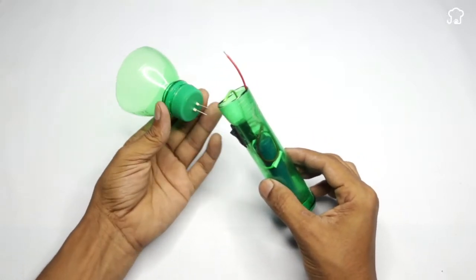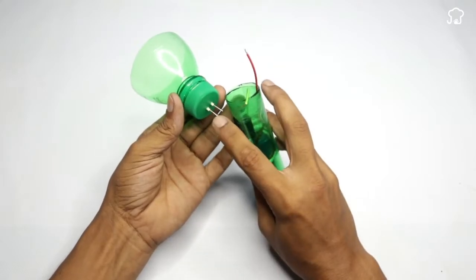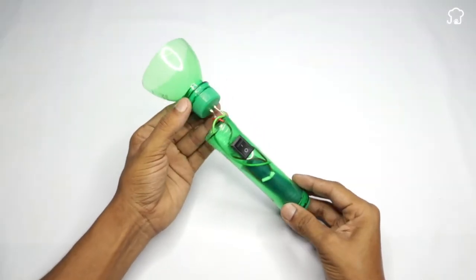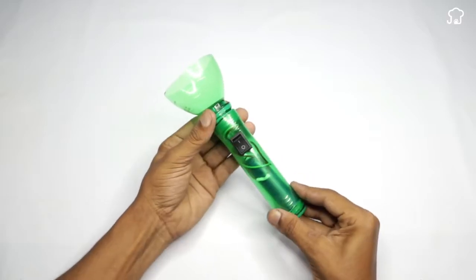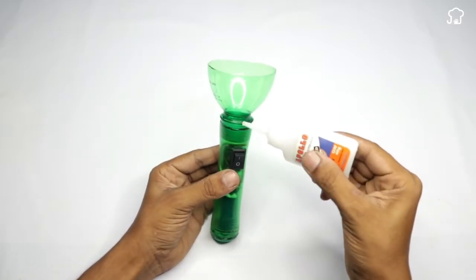Now, we will fix the other end with the LED bulb so that it fits in the cylinder. In the same way, we will fix it with glue.